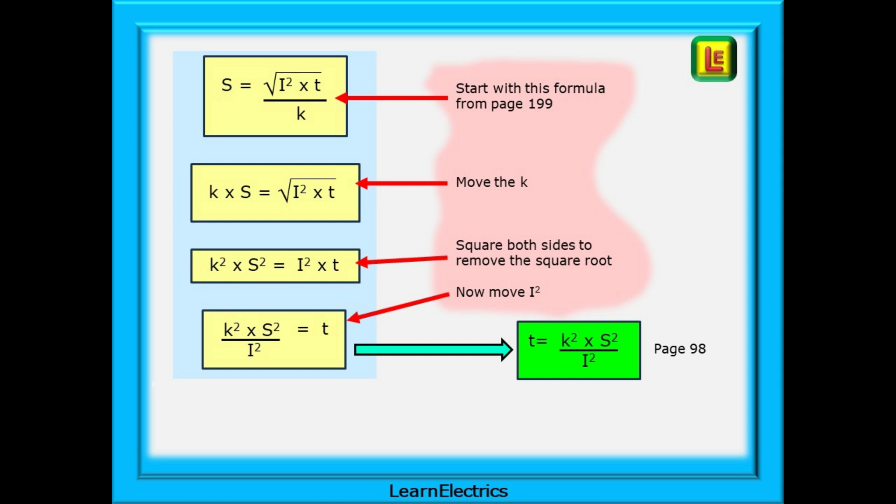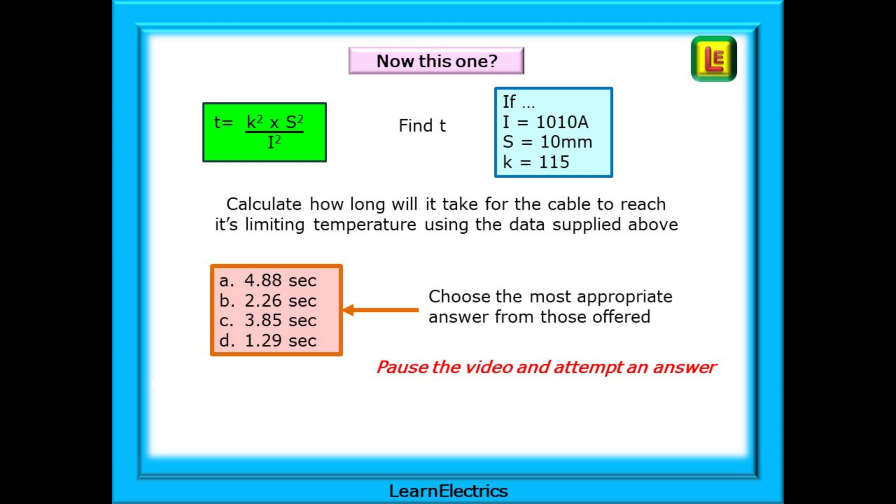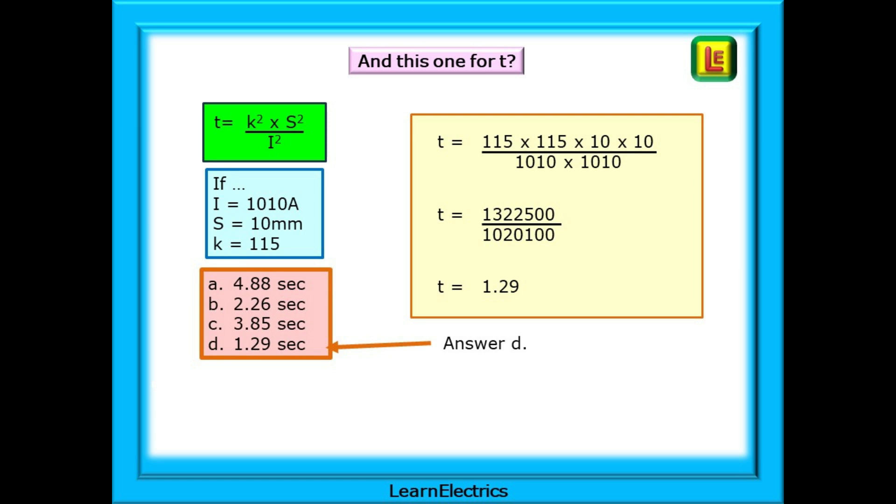Now let's put some numbers to it. Different numbers this time. We need to find the value of T. We are asked to calculate the time, how long it will take for the cable to reach its limiting temperature using the data supplied in the blue box above. And then choose an appropriate answer from the four options available. Pause the video while you attempt the question. The answer is on the next slide. Follow our working out and the method we've used. Squares of numbers are just the number multiplied by itself. 10 squared is just 10 multiplied by 10. And shown here is an easy way to calculate with squares of numbers. You should have an answer of about 1.29 seconds, answer D. The answer is telling us that, with this amount of fault current, a 10 mm earth conductor will reach its 70 degree temperature limit in a little over one second.